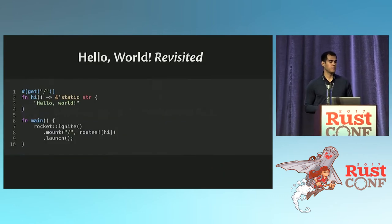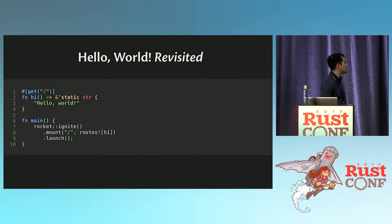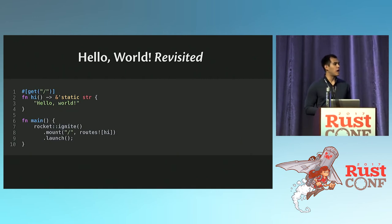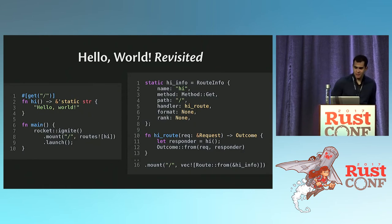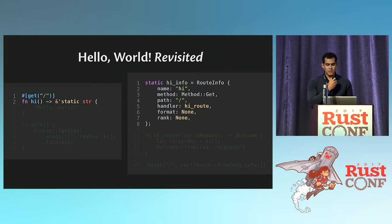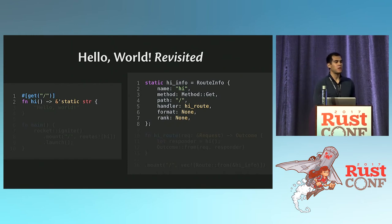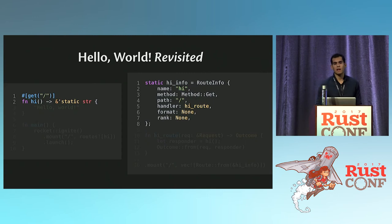Let's go back to our hello world example. We have our GET route for the root path and then our main function. What code does Rocket generate when you write this program? It generates a route info structure. You can sort of just map it directly — it takes the name, makes it a string; takes the method, makes it an actual method type; takes the path, puts it in a string. The handler and format, rank, and other aspects of Rocket are also included.